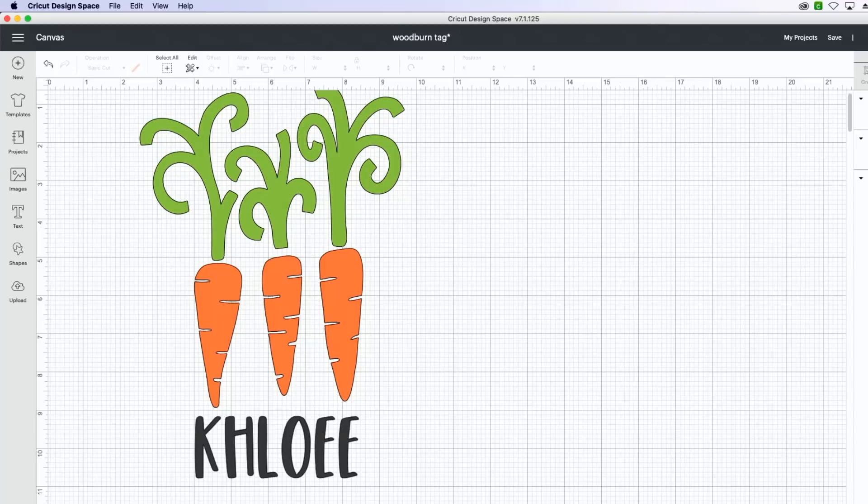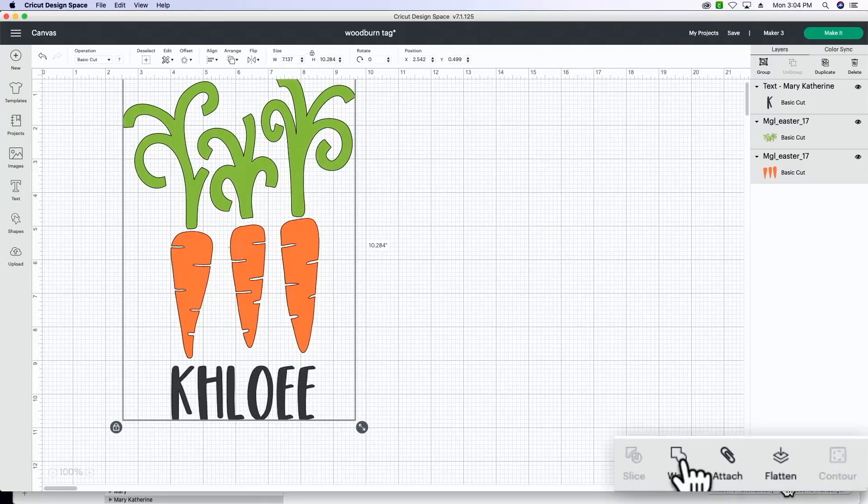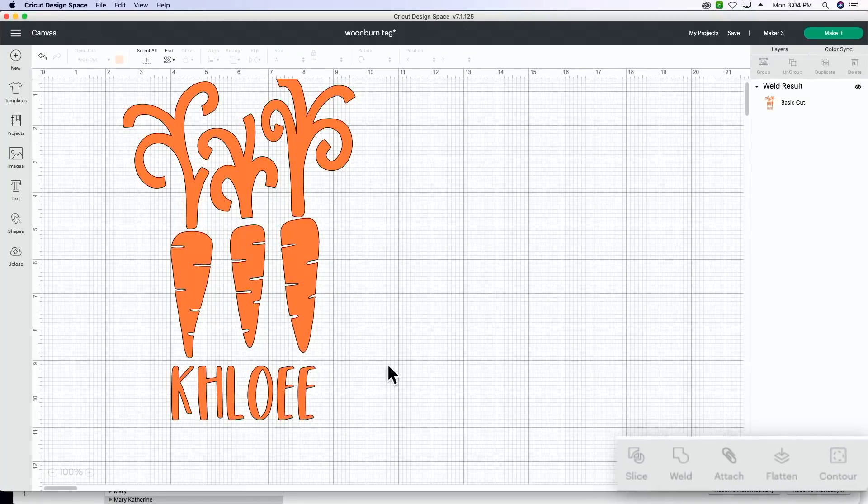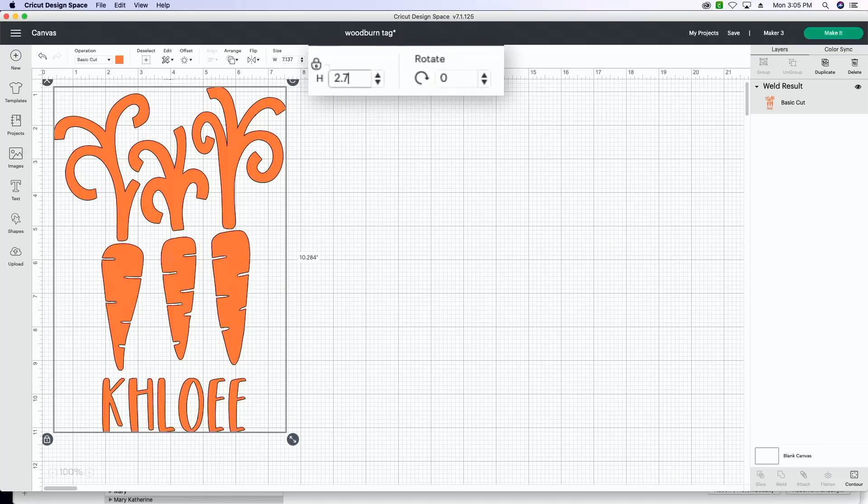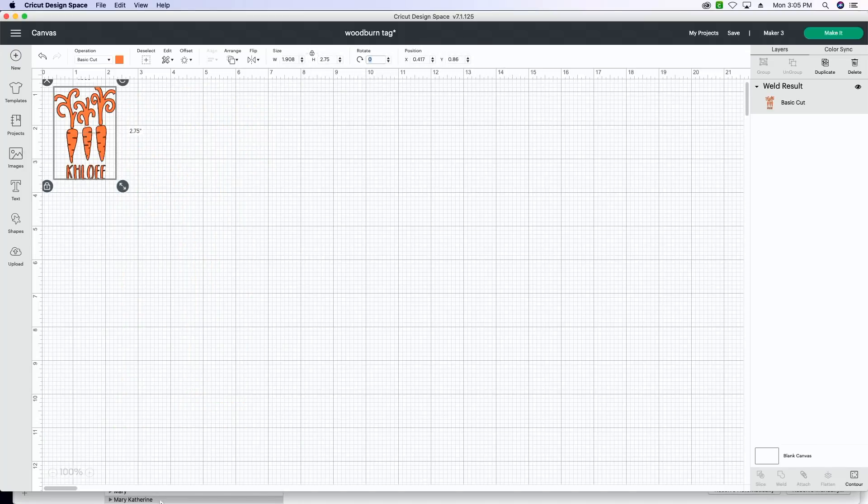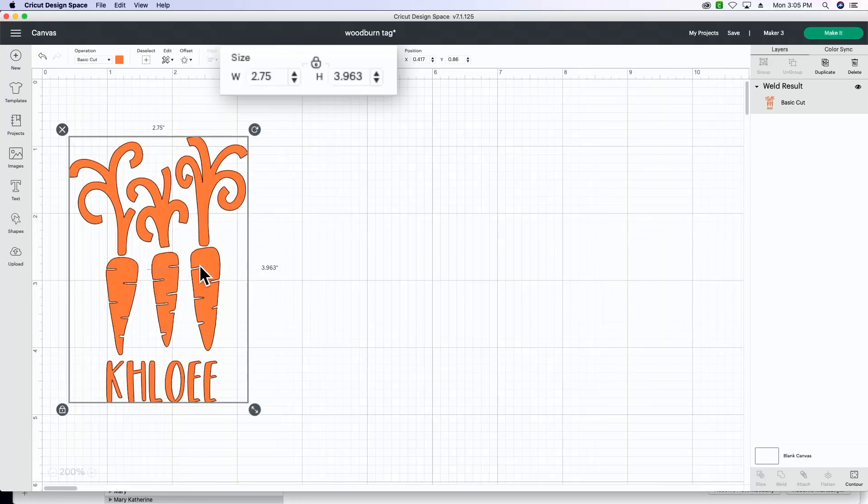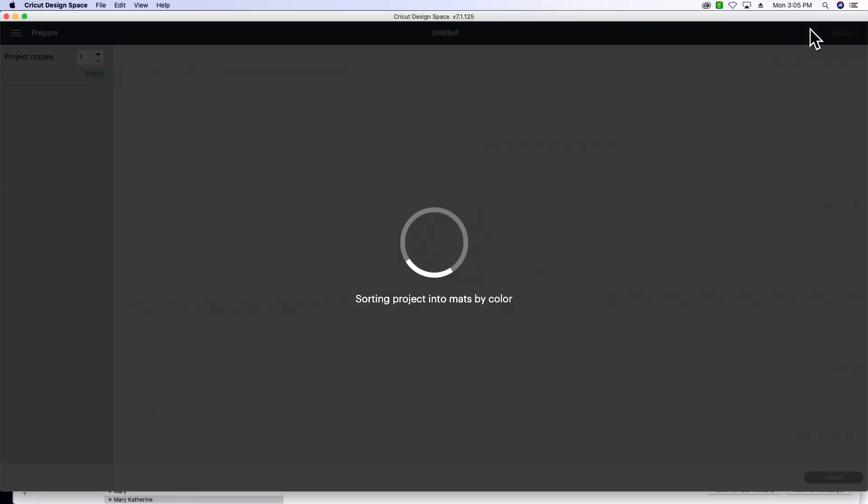After you get your text to the size that you want, you're going to click and drag and we're going to weld everything together. This is going to put it all on the same mat so it cuts from the same stencil vinyl. And then we're also going to resize this to our tag. Our tags are 5 by 2 and 3 quarters. They do go at an angle at the top, so I don't want to make it super tall. So let's go ahead and adjust this to 2 and 3 quarters because we know that's the width.